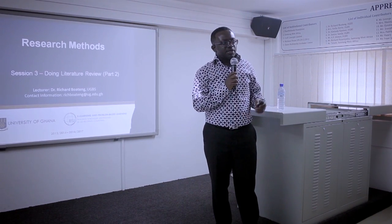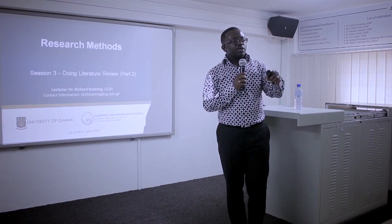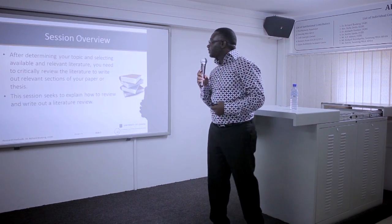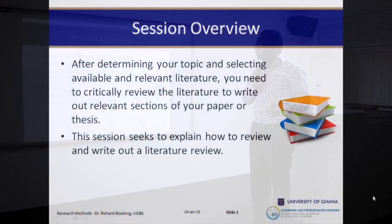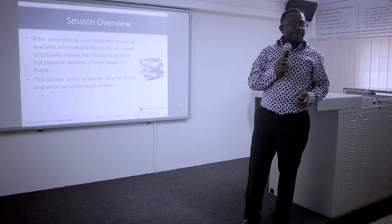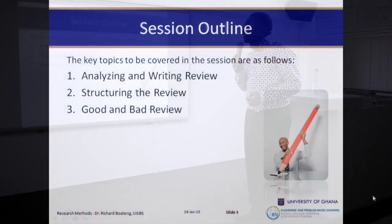Once again we meet to discuss research methods. What we'll be doing today is looking at literature review, part two. Part one looked at how to find literature; part two is going to tell us how to write. After you have determined your topic and selected your available and relevant literature, you need to critically review the literature to write out relevant sections of your paper or thesis. Thank you for participating in our sessions.